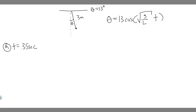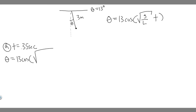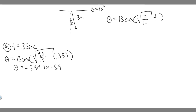For part a, g is 9.8 since we're on Earth, and the length is 0.3 meters. The time is 0.35 seconds. So theta equals 13 times the cosine of the square root of 9.8 divided by 0.3, times 0.35. Make sure your calculator is in radians, or you'll get the wrong answer. When you do this, you'll get theta equals minus 5.414, which we round to minus 5.4 degrees. That's your answer to part a.